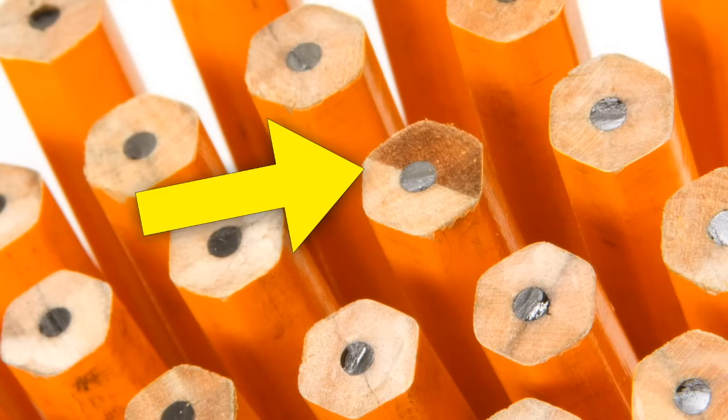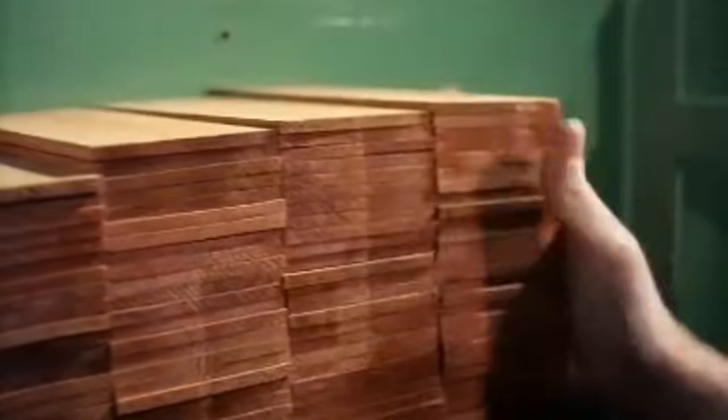Now, today, most pencils are made by machines in factories like this. They start with flat pieces of wood. Each piece will be made into many pencils. Saws carve grooves into each piece of wood, then glue is squirted into the grooves.